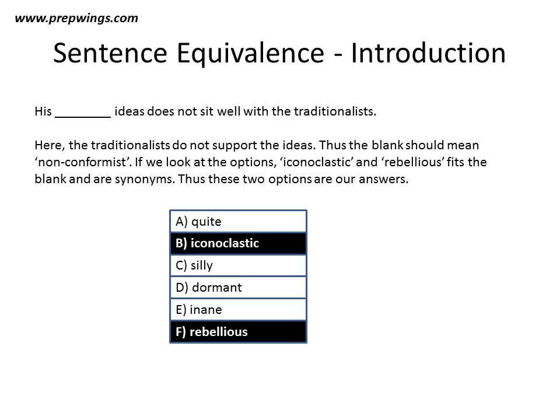So the approach you should take is: first, understand the sentence and try to fill it with your own word — like here, we filled the blank with 'non-conformist.' Then go to the options to look for the two options which mean non-conformist. This is the approach you should take to sentence equivalence questions. Thanks a lot for watching this video.